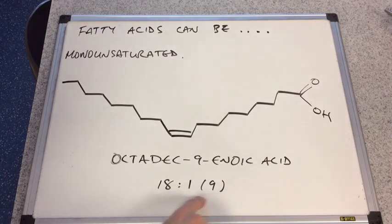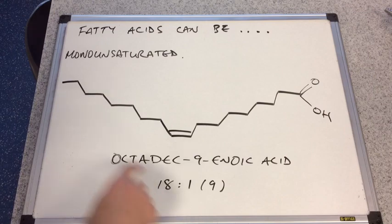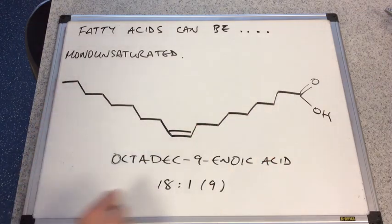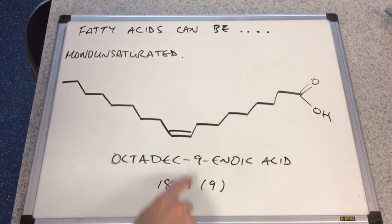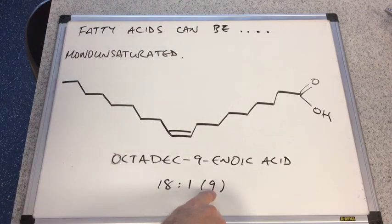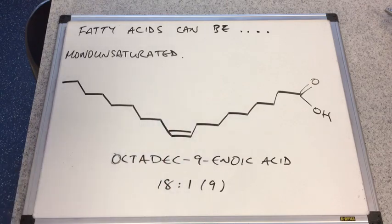The octadec means there are 18 carbons in the chain. And you can see there's the shorthand. So the 18, the number at the start, remember, is the number of carbons in the chain. So we've got 18 colon 1, 1 double bond, 1 carbon-carbon double bond. And the bracketed number now obviously indicates where that double bond is. So it's at carbon number 9.